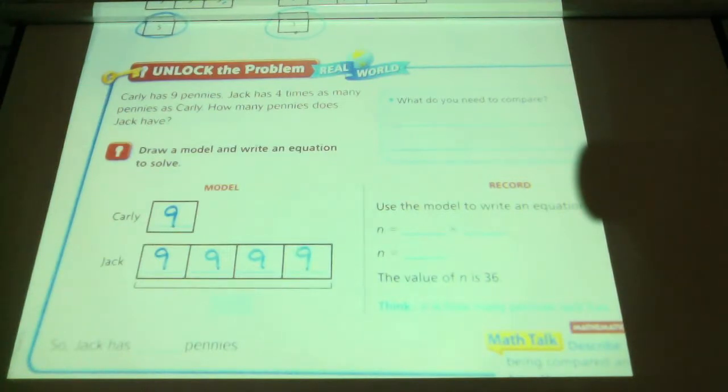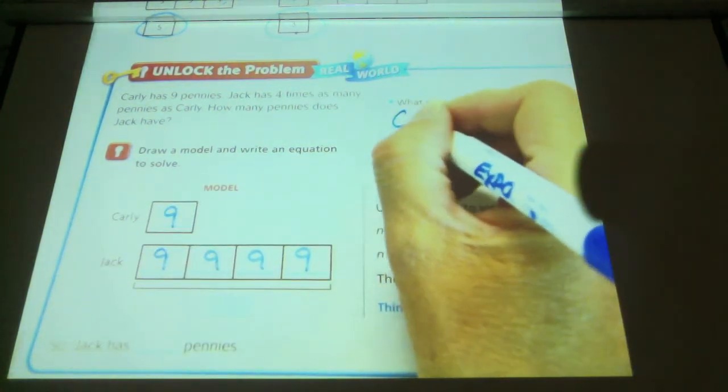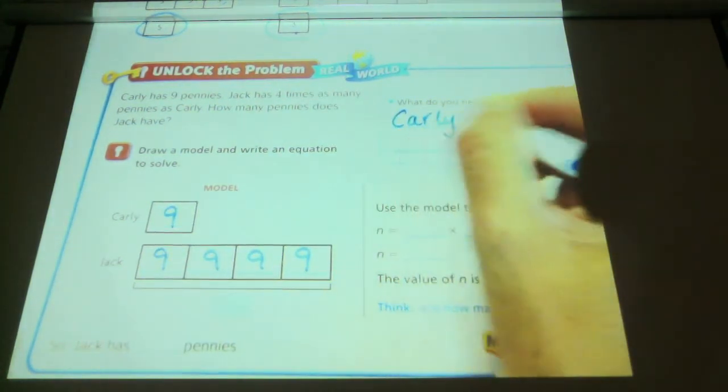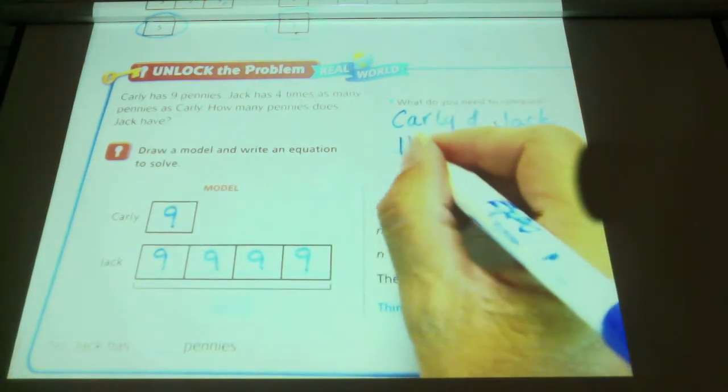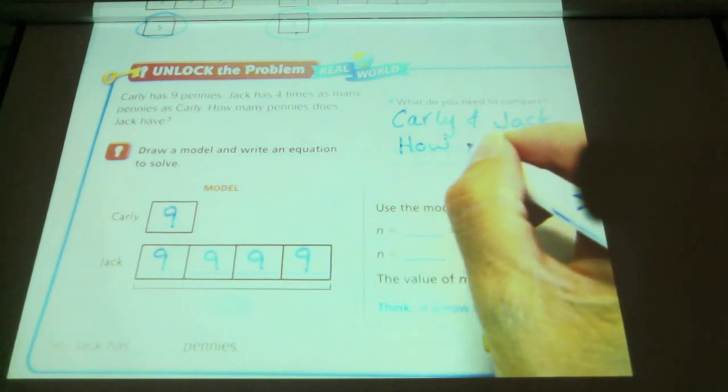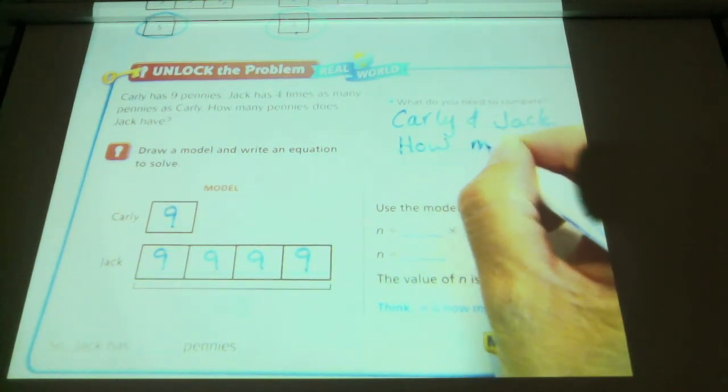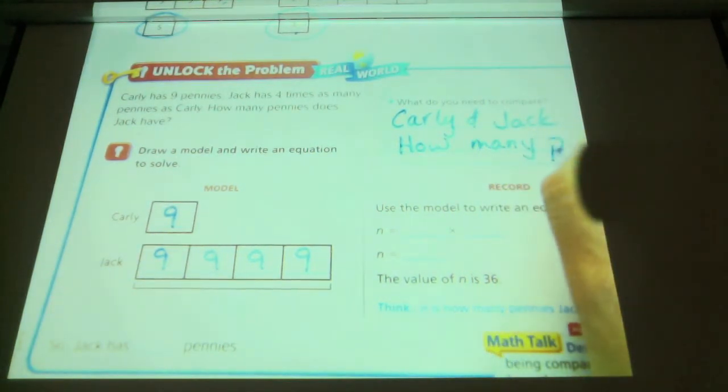What are we comparing here when we're looking at these? Who are we comparing? Ian? Carly. Carly and? Jake. Carly and Jake? Jack. Jack? And they're how much money, right? How many pennies, I think it was. How many pennies they have.